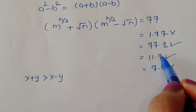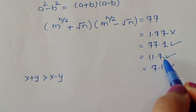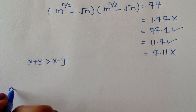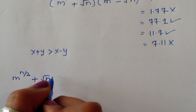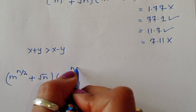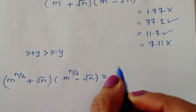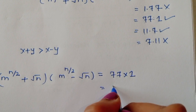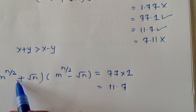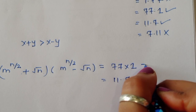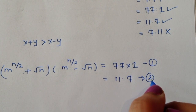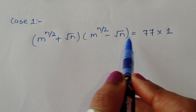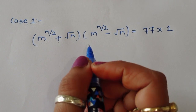We have two valid cases: Case 1 with factor pair 77 times 1, and Case 2 with factor pair 11 times 7. Here (x plus y) corresponds to the larger factor and (x minus y) to the smaller. For Case 1: m power (n/2) plus square root of n equals 77, and m power (n/2) minus square root of n equals 1.